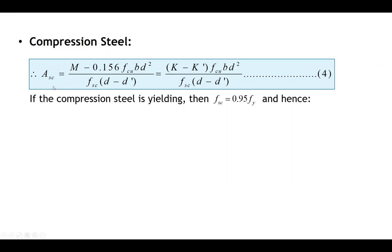From the equilibrium, we reach Equation 4: the area of compression steel Asc = (K − K') × Fcu·b·d² / (Fsc × (d − d')). Here K = Mu / (Fcu·b·d²), and K' is the constant value 0.156. Fsc is the stress in the compression steel — if the compression steel is yielding we replace Fsc with 0.95 fy; if not, we'll see shortly how to calculate Fsc.